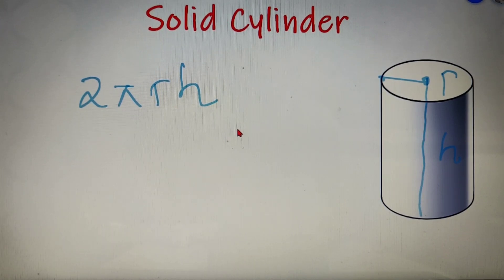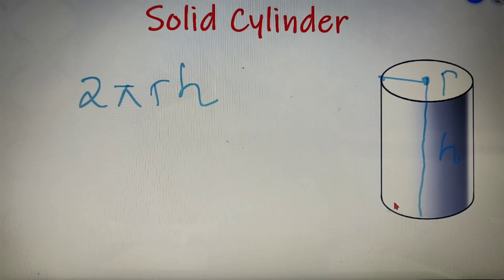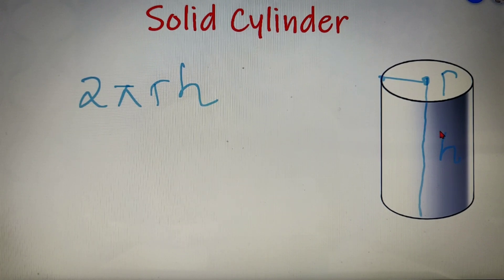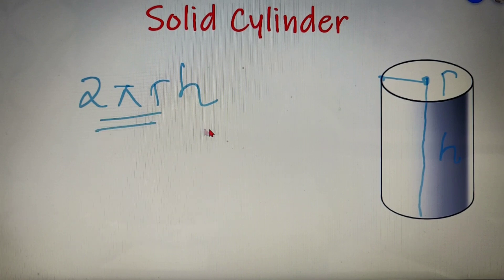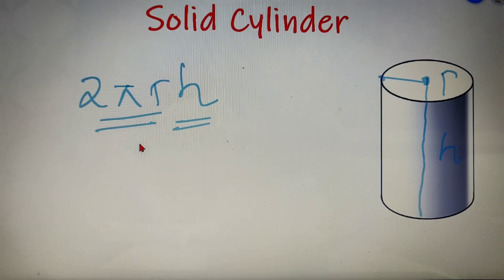The curved surface area is called so because if you roll a cylinder, the curved portion is what touches the ground, and the total area that touches the ground is the curved surface area. This equals the perimeter of the cross-section multiplied by the height — that is, 2πr × h — giving a curved surface area of 2πrh.